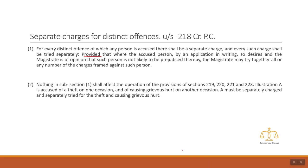There is a proviso: where the accused person, by an application in writing, so desires, and the magistrate is of the opinion that such person is not likely to be prejudiced thereby, the magistrate may try together all or any number of the charges framed against such person. If you feel that you can try these offenses together, then an application can be made to the magistrate.